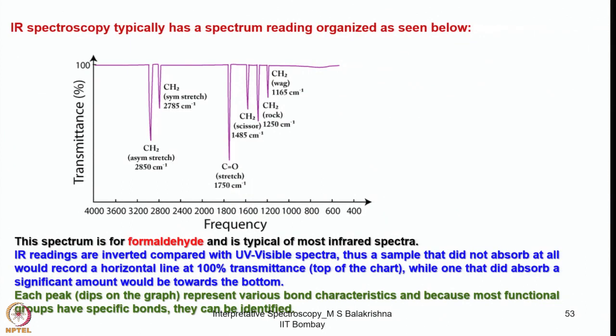This is the spectrum of anisole — whatever bands we identified from prior knowledge can be seen here with little or no difference. IR spectroscopy typically has a spectrum reading organized with transmittance versus frequency in wave numbers. The formaldehyde spectrum is typical of most infrared spectra. IR readings are inverted compared with UV-visible spectra: a sample that did not absorb at all would record a horizontal line at 100% transmittance, while one that absorbs significantly would be towards the bottom.